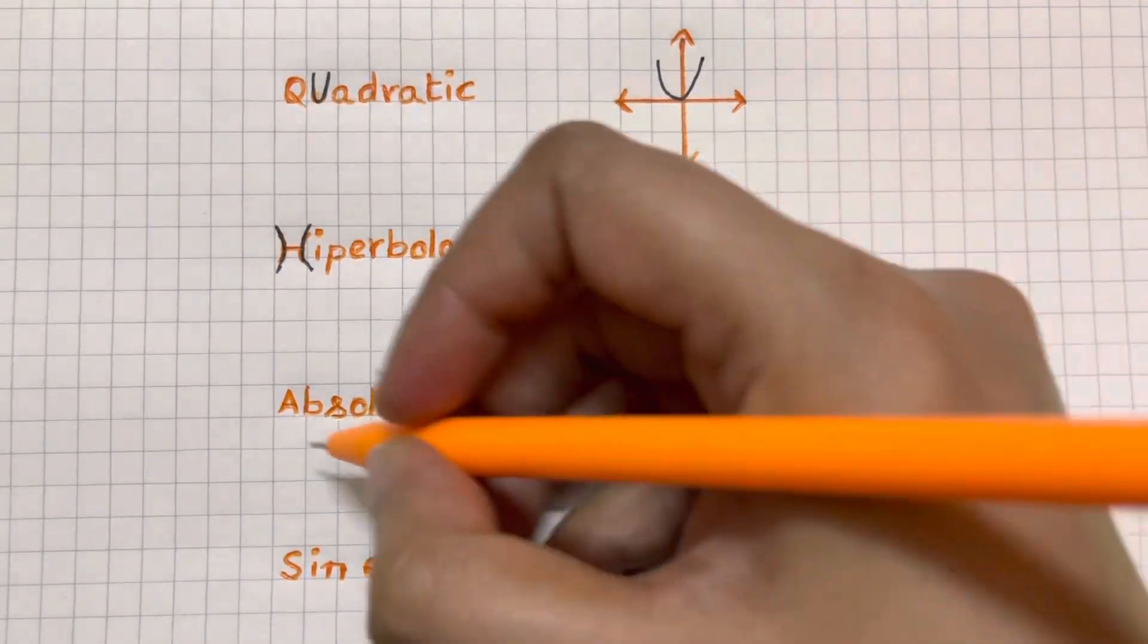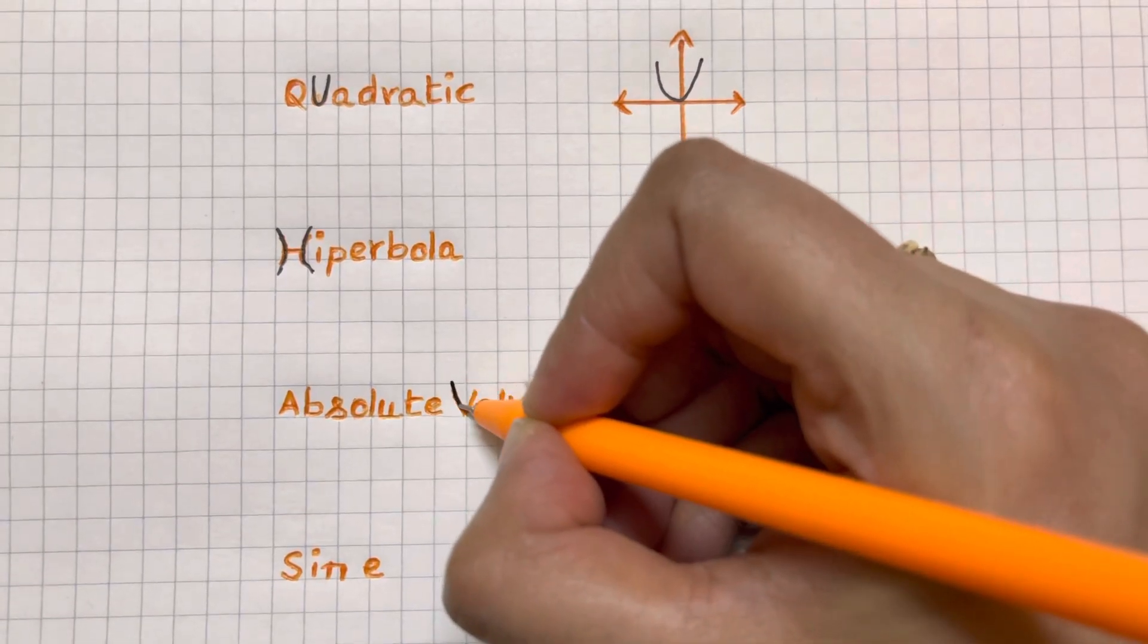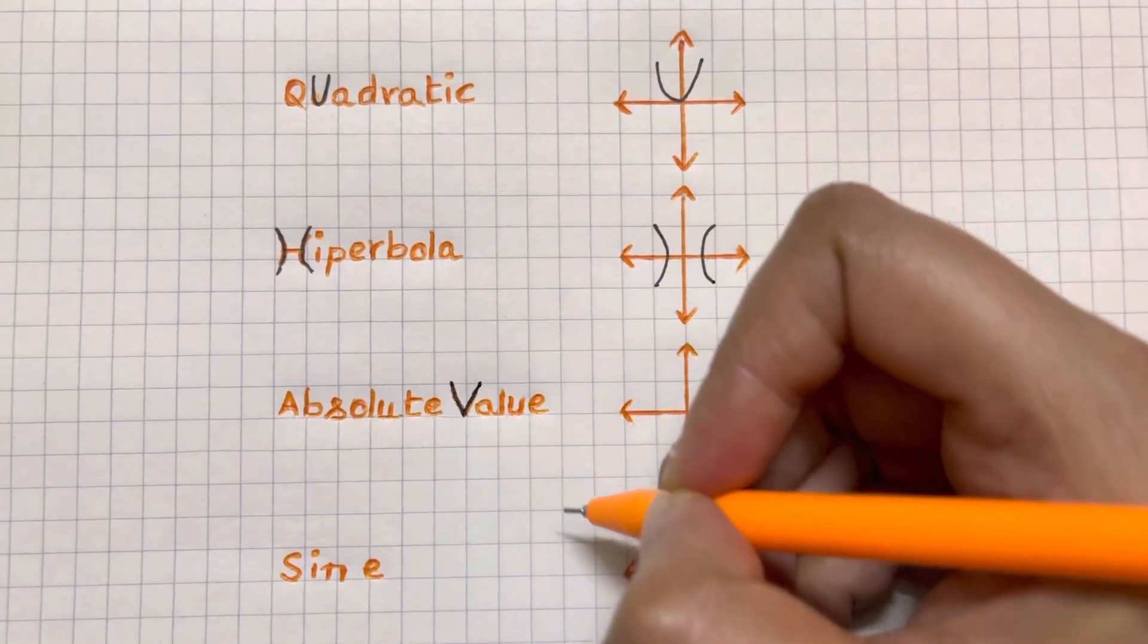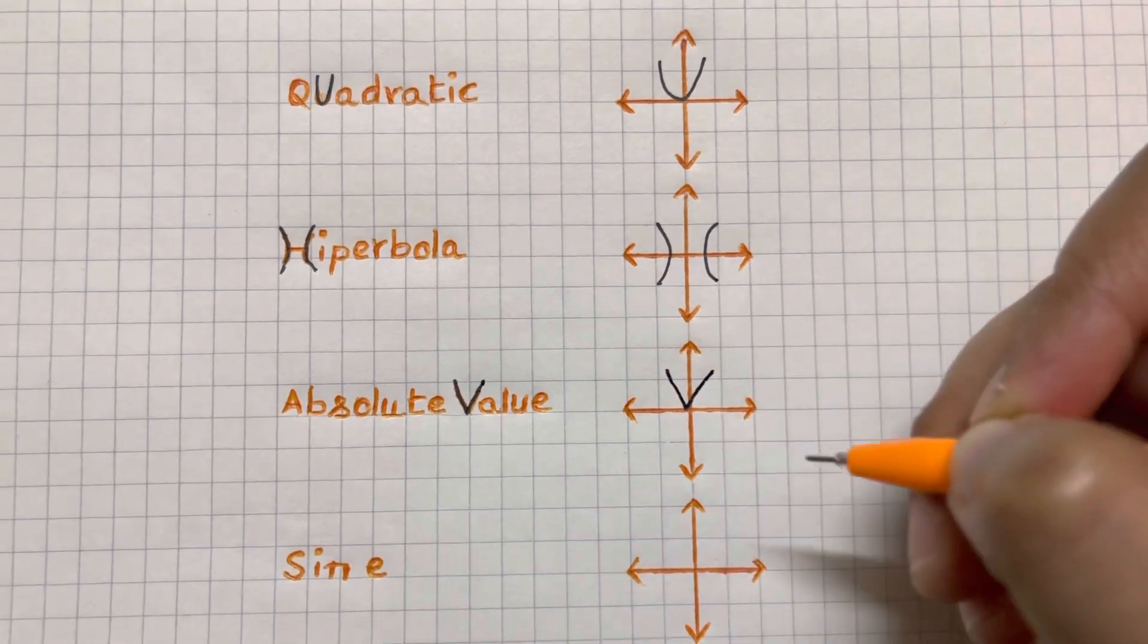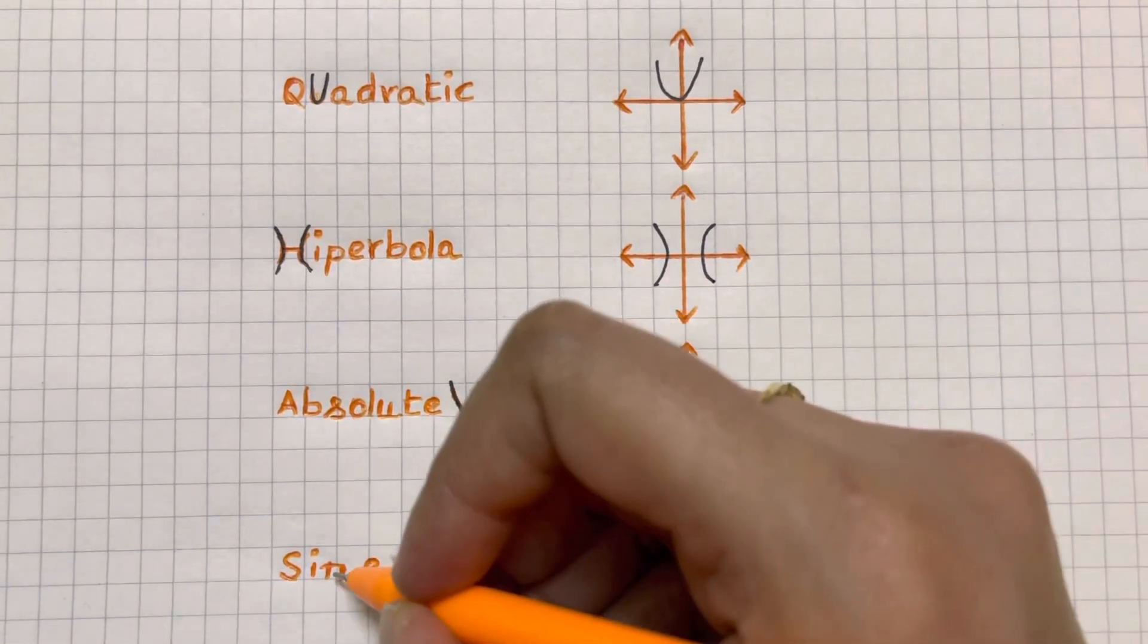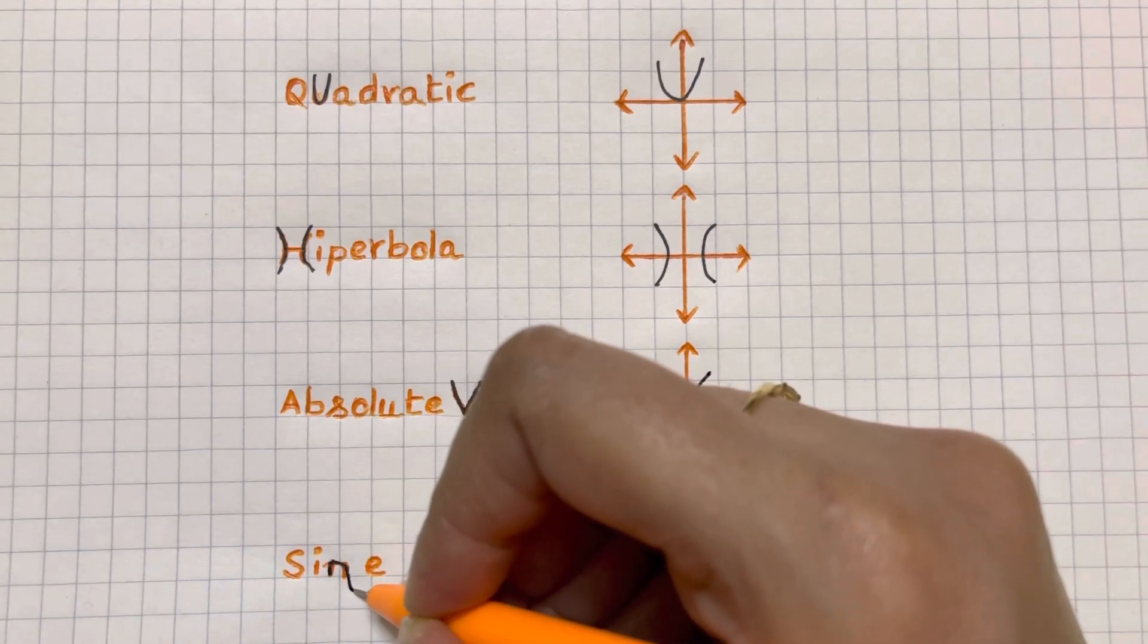Absolute value - absolute value means a non-negative number so it will always be a non-negative graph. Sine function - you just have to remember the N, and that's it, this is your graph.